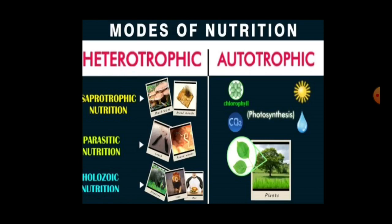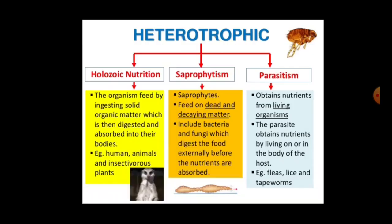The first one is holozoic nutrition. Organisms feed by ingesting solid organic matter, which is then digested and absorbed in their body. This type of nutrition is called holozoic nutrition. The best examples of holozoic nutrition are humans, animals, and all insectivorous plants.